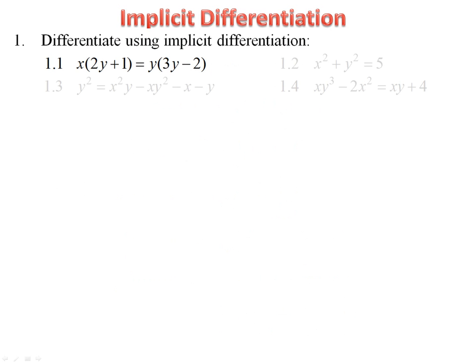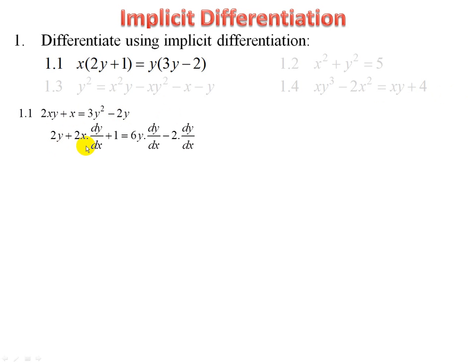Let's have a look at a few more examples. Implicit differentiation — I'm going to multiply these out first, which makes it a bit easier. Now I'm going to use product rule and chain rule — in fact also chain rule here. Product rule: derivative of x, and derivative of 3y squared is chain rule because y is the inside function, therefore dy/dx. Y is an inside function here too, so it's dy/dx. Collect dy/dx terms, factorize, divide — there we are.